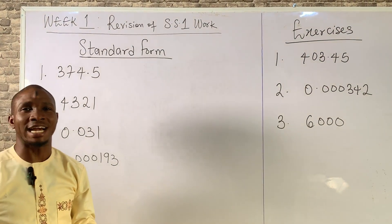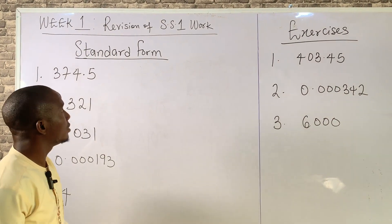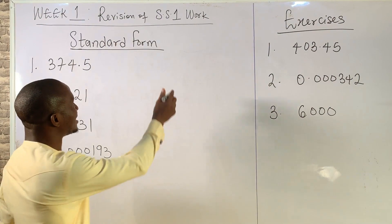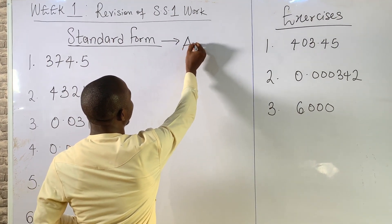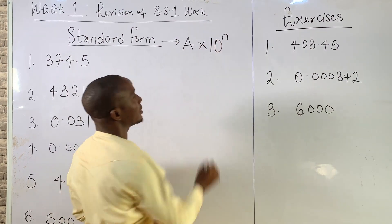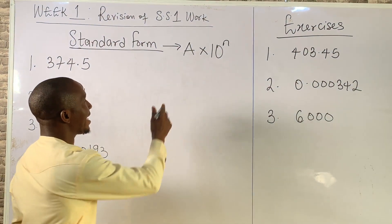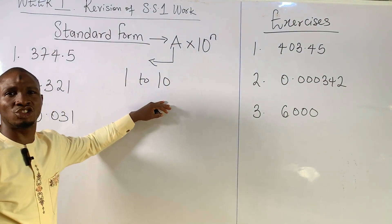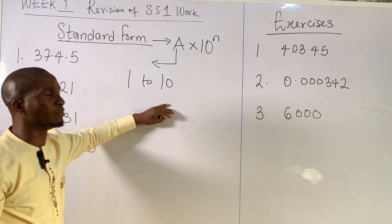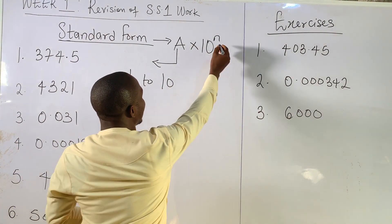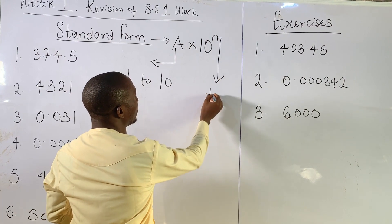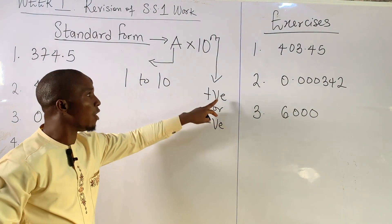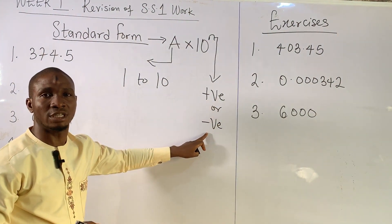We want to see how we can express numbers in standard form. Please kindly note: the general form of expressing numbers in standard form is A times 10 raised to power N. A has values between 1 and 10 — it can be an integer or in decimal form. While N can either be a positive or negative integer.